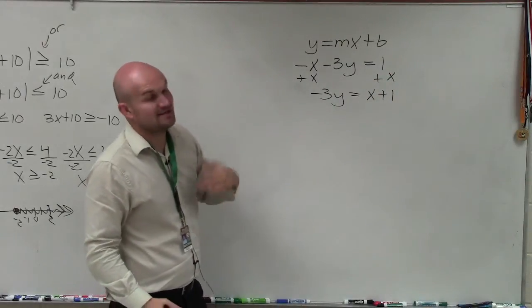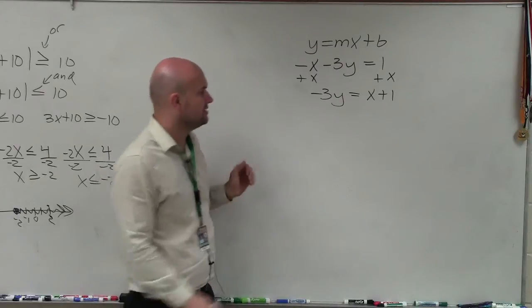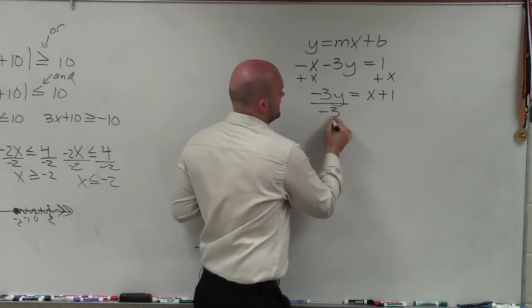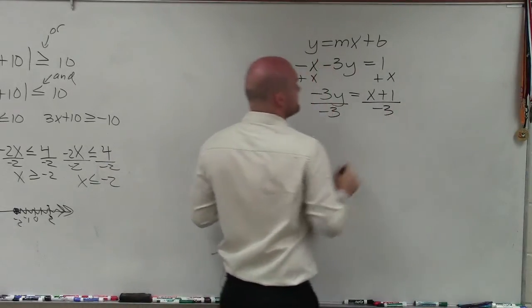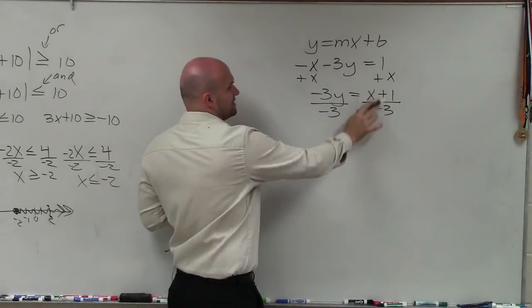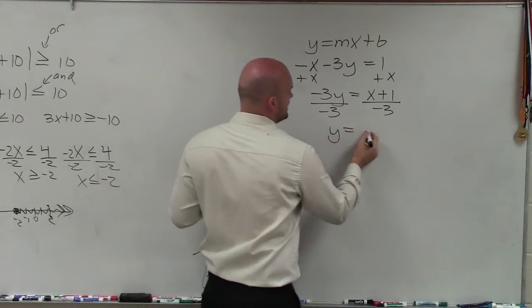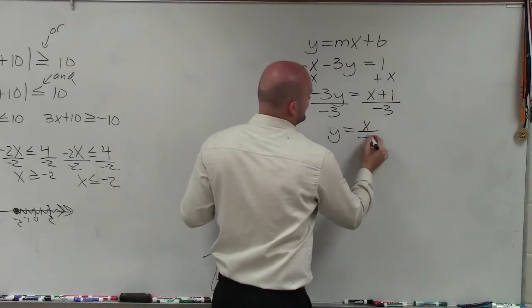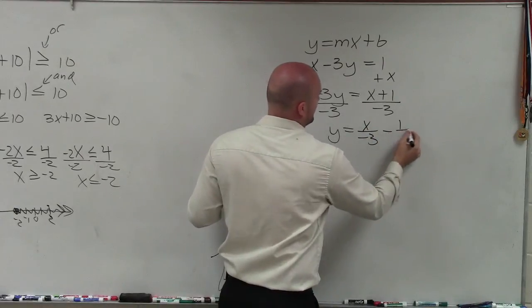The next thing is now I see that my variable was being multiplied by negative 3, so now I'm going to divide by negative 3 on both sides. It's very important to make sure we divide the 3 into both these terms. Therefore, I have y equals x divided by negative 3 minus 1 third.